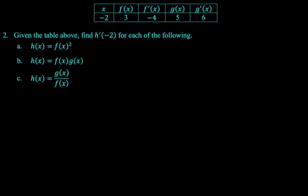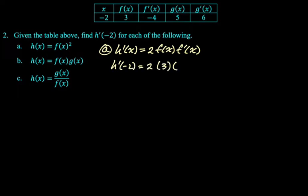All right, next question. Given the table above, find h'(-2) for each of the following. h(x) = f(x)². So the function is being squared. In this case, the derivative of something squared is two times that thing, so 2f(x) times the derivative of that thing, so times f'. That's all you got to do. You just got to keep calm. And the more you do it, the easier it gets. Now we're going to replace every x we see with negative two. I just read them off the table. So f(-2) is 3, and f'(-2) is -4. So we get 2 times 3 times -4, which is -24.